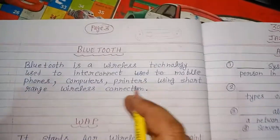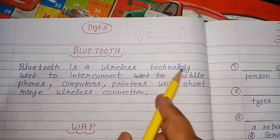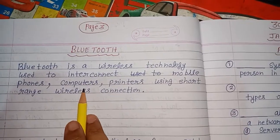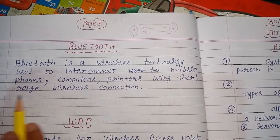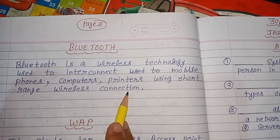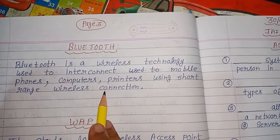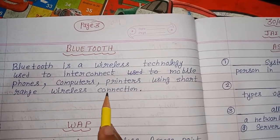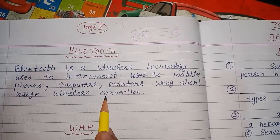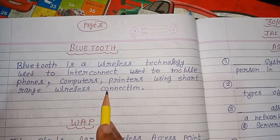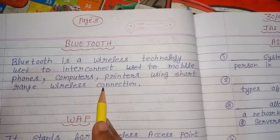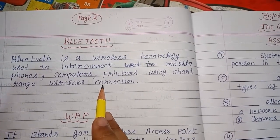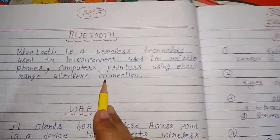Next topic: Bluetooth. Bluetooth is a wireless technology used to interconnect mobile phones, computers, and printers using short range wireless connection. यह एक wireless technology है जिसके through हम mobile phone और computer printers को एक दूसरे से connect करते हैं, बट इसमें area की limitation होती है. अगर आप उस limit से बाहर जाएंगे, तो connection break हो जाएगा.